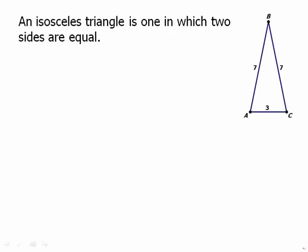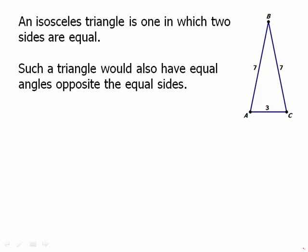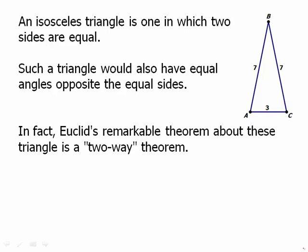An isosceles triangle is one in which two sides are equal. If the two sides are equal, then it must be true that the angles opposite those sides are also equal. So those two angles here would have to be equal.